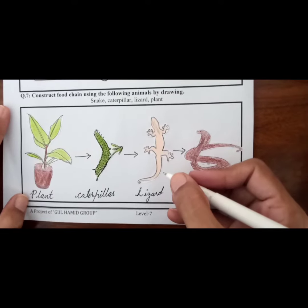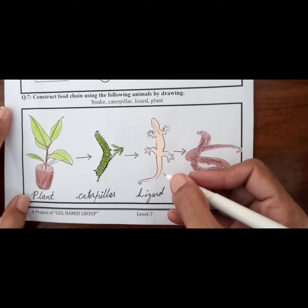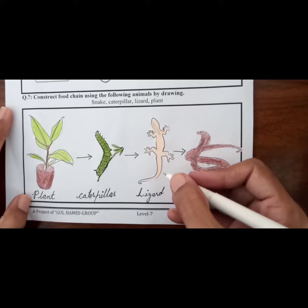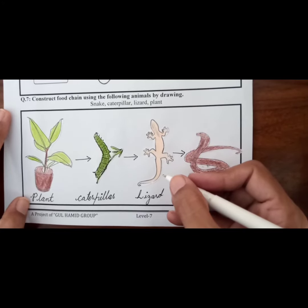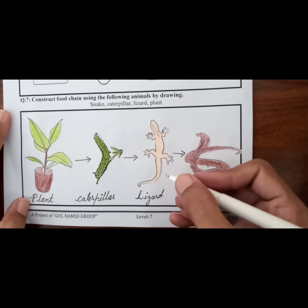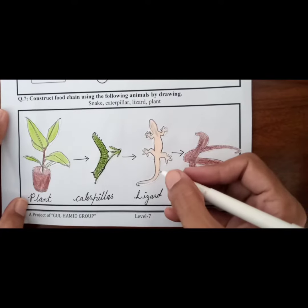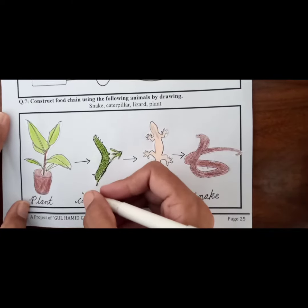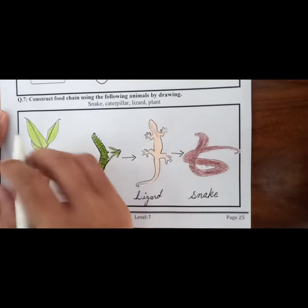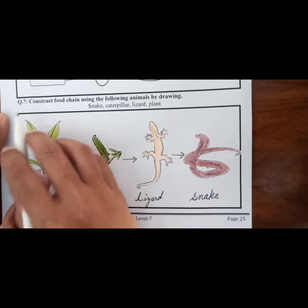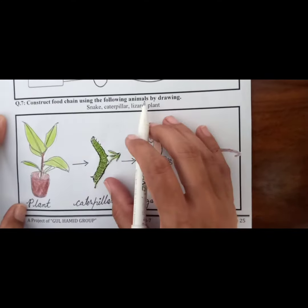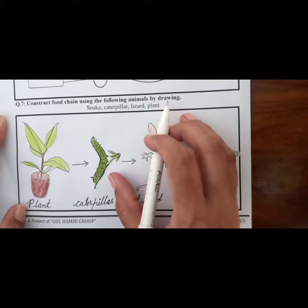Assalamu Alaikum students, how are you? I hope that you will be fine and enjoying your summer vacations nicely at your homes. Students, today we have to solve page number 25 of your remedy pack, and the subject is science. Today we have question number seven: construct a food chain using the following animals by drawing.